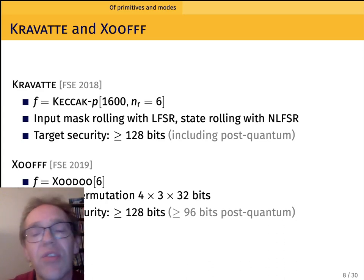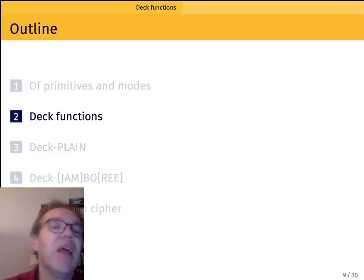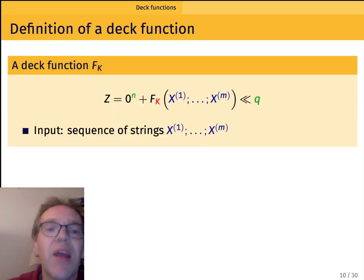And all these things require for their security cryptanalysis. So we thought maybe it's a good idea to put the border elsewhere and put the border at a level where the underlying primitive can handle variable length messages and make one function like that and build modes on top of that.